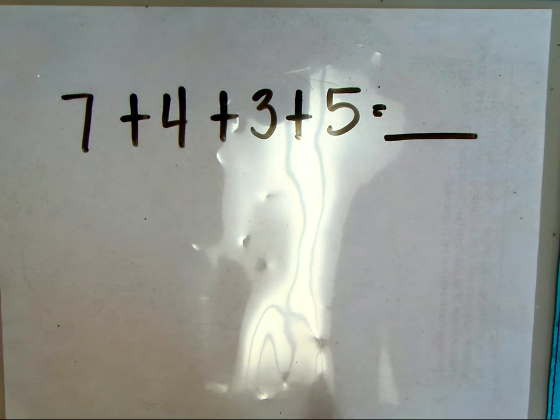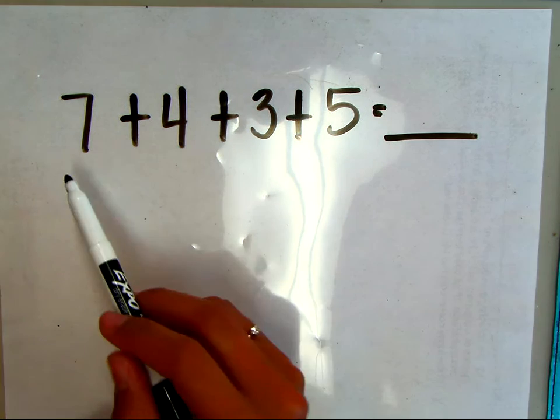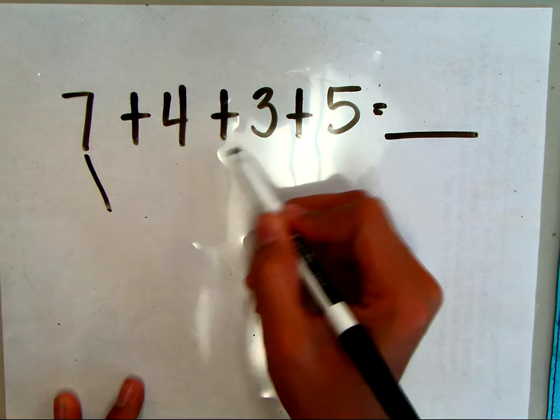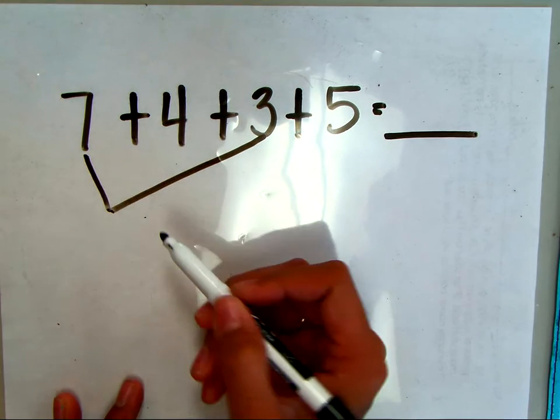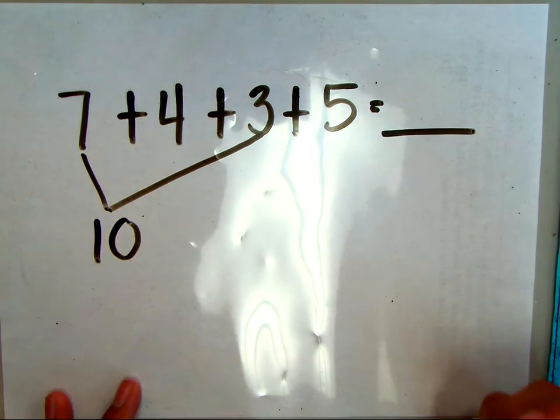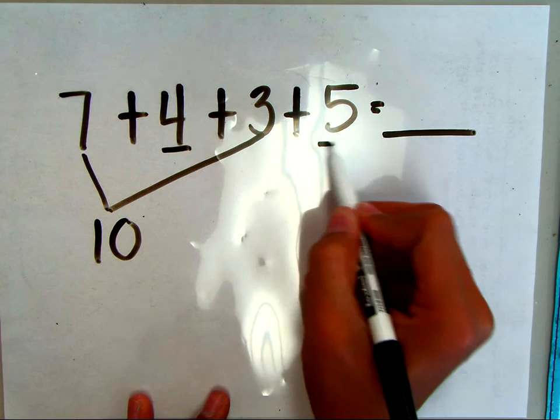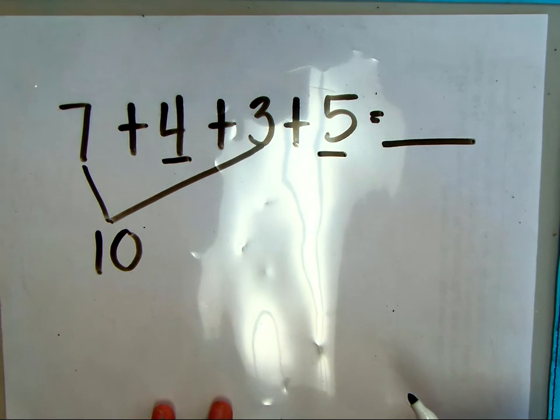for strategies like make 10, doubles facts, and doubles plus one. If I look at these numbers and look for combinations of 10, I'm going to bring down the 7 and the 3 because I know 7+3 makes 10. The two numbers that I have left to add are 4 and 5.